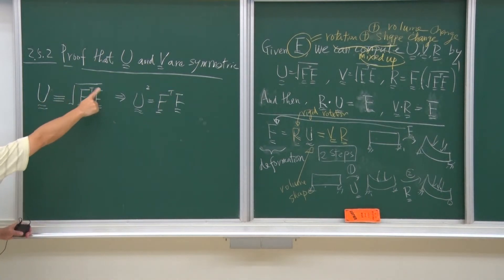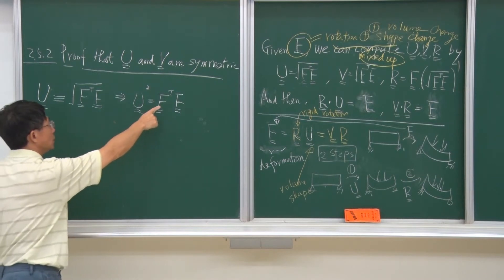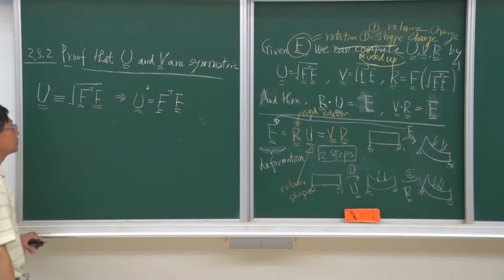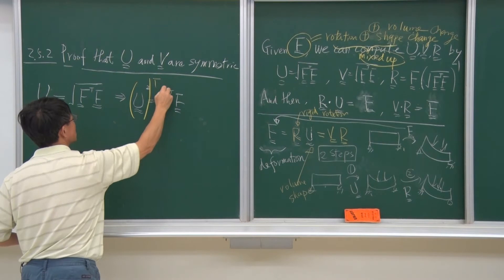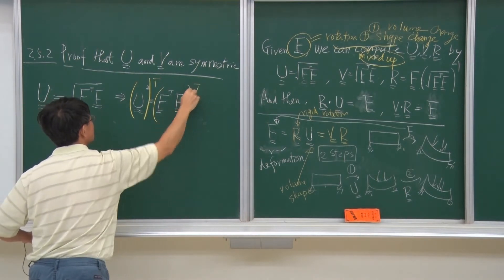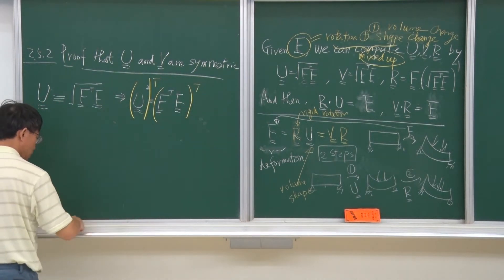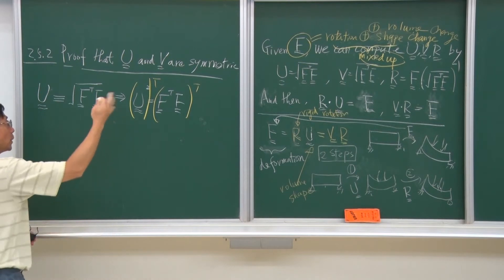Because it is a square root of this matrix, we just give it back to the U square, not the square root now. And then we perform the transpose operation, transpose operation.